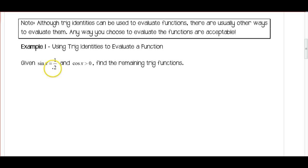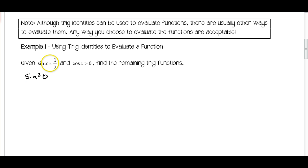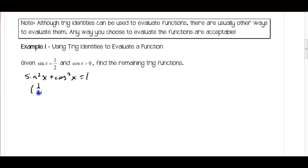We're given that sine x is positive one half and we know that cosine x is greater than zero, so we know that we're in the first quadrant. I'm going to use my Pythagorean identity: sine squared x plus cosine squared x is equal to 1. I know what sine of x is, so I'm going to substitute that in.